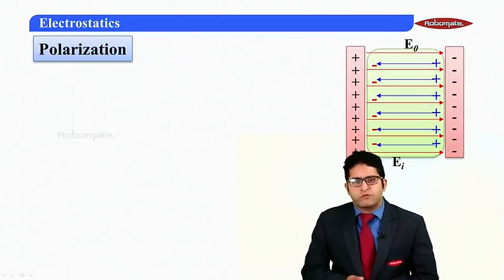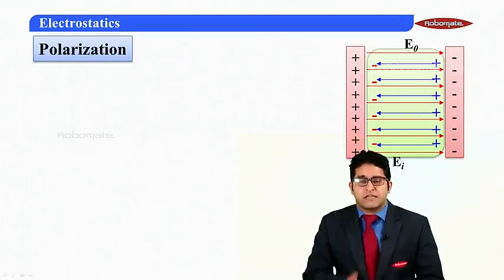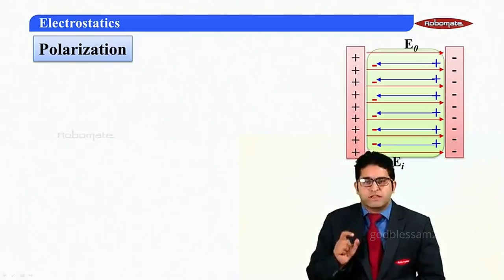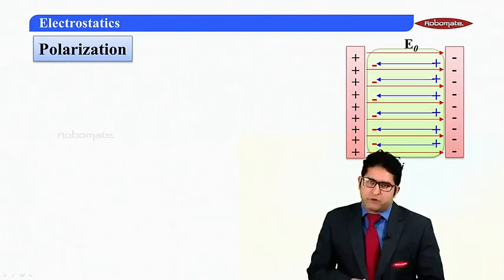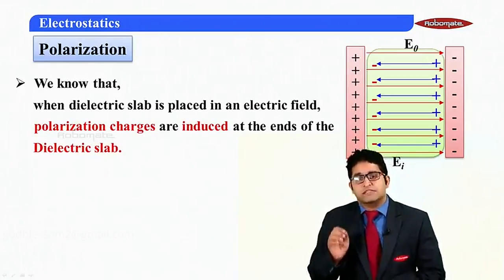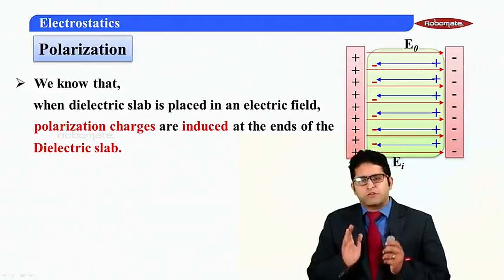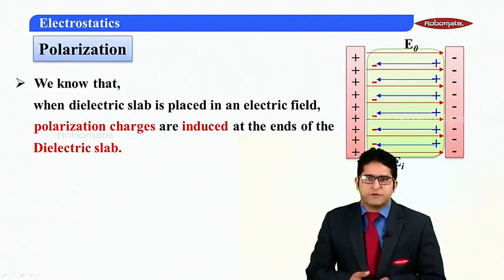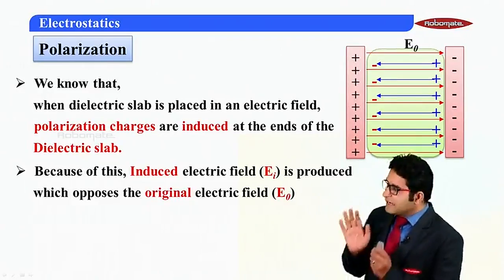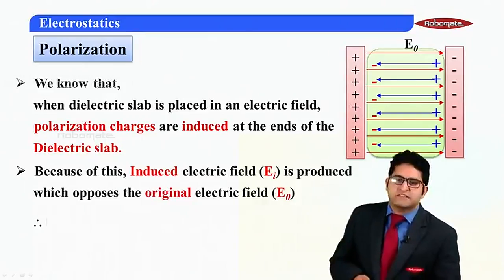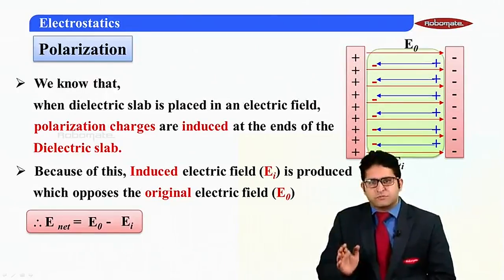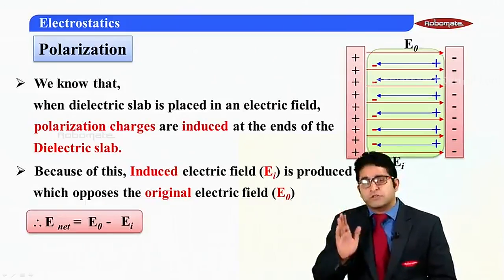In the previous module we saw that whenever a dielectric slab is placed in an external electric field, charges are developed on the surface of the dielectric. These charges are referred to as polarization charges, which are induced at the ends of the dielectric slab. Because of these induced charges, an induced electric field Ei is produced, which always opposes the external electric field E₀. The net electric field is given by E_net = E₀ − Ei, because both are in opposite directions.